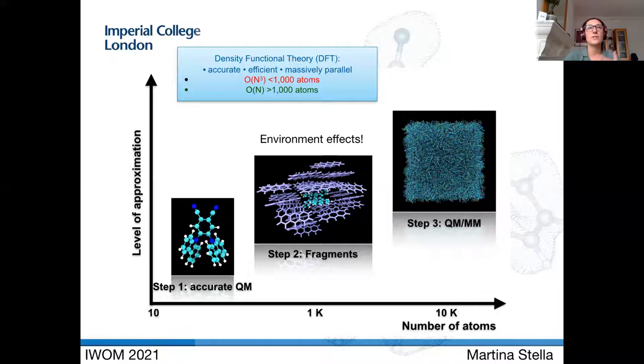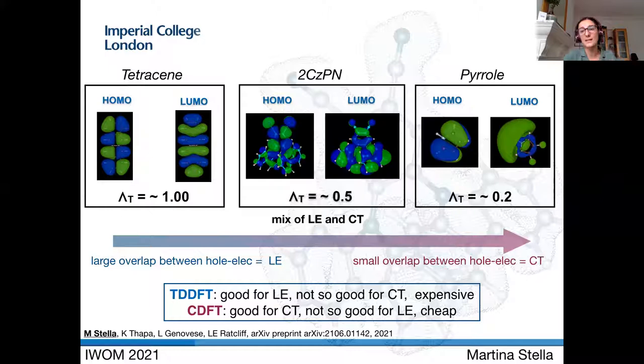Density functional theory represents one of the choices because it has a good tradeoff between accuracy and computational cost. We need to classify our excitations. I propose a descriptor based on the distance between HOMO and LUMO. For TADF molecules like 2TZPN, we find that the excitation character is somewhere a mixed character between being local and charge transfer.